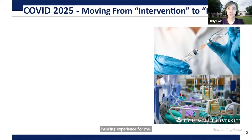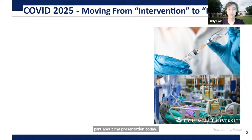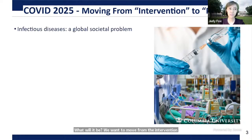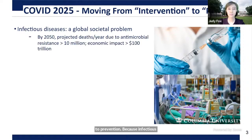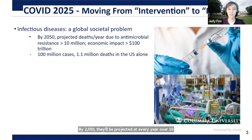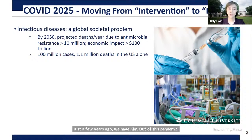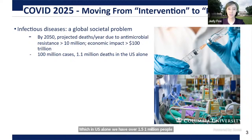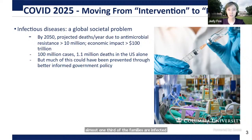I want to talk about the future — that is the exciting part of my presentation today. Imagine COVID in 2025: we want to move from intervention to prevention, because infectious disease is such a societal problem. By 2050, there will be projected deaths over 10 million every year, and the economic impact will be over $100 trillion. Just a few years ago we came out of this pandemic, which in the U.S. alone saw over 1.5 million people dead and over 100 million cases — almost one-third of families infected.